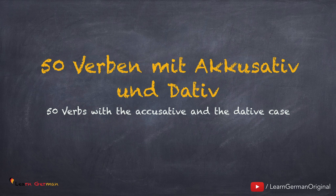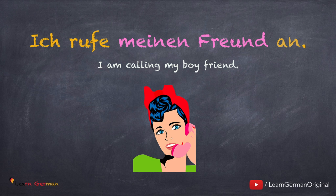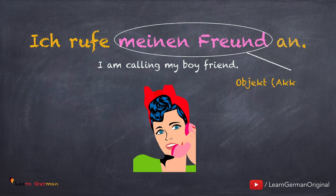50 Verben mit Akkusativ und Dativ. There are a few verbs that take only the accusative case. For example, Ich rufe meinen Freund an. In this case, meinen Freund is the accusative object. The verb anrufen will take only the accusative object.